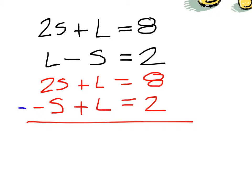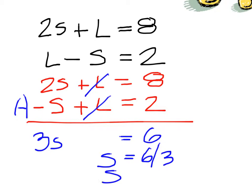If you subtract these two equations, they cancel out. 2S minus a negative S is 3S. 8 minus 2 is 6, so divide 6 by 3 to come up with 2 for S.